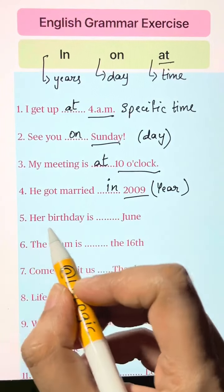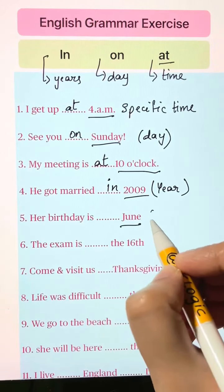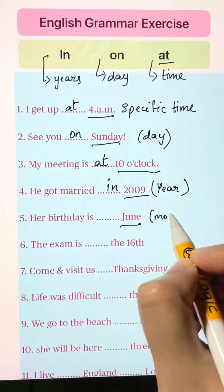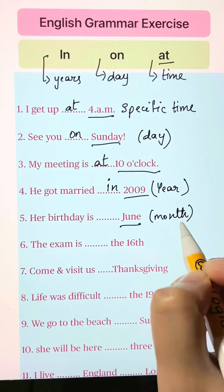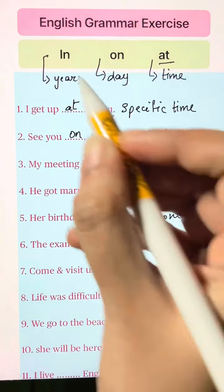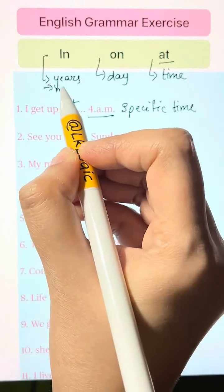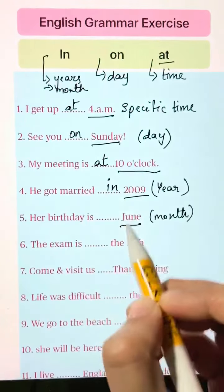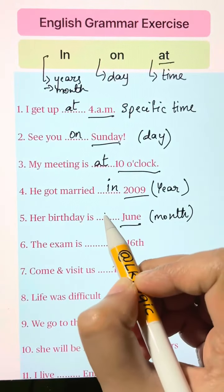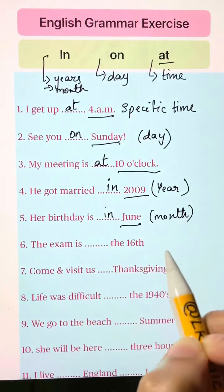Her birthday is blank June. Here you have a month mentioned. For months, we use 'in.' Her birthday is in June.